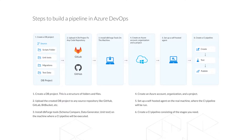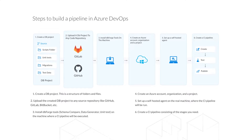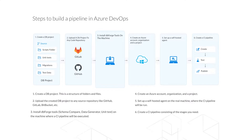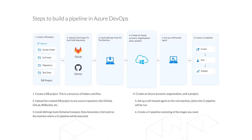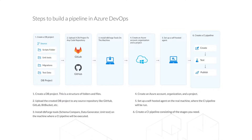This slide shows all the steps necessary to set up a pipeline in Azure DevOps. The first step involves developing a database project that comprises a set of folders with the corresponding scripts. The second step is uploading the project to a repository — GitLab, GitHub, Bitbucket, etc. In the third step, the dbForge tools are installed on the machine where the pipeline will be executed. The fourth step is creating an Azure account and project in Azure DevOps. The fifth step involves configuring a self-hosted agent to link Azure DevOps with the computer on which the pipeline will run. And finally, the sixth step is the development of the pipeline itself.